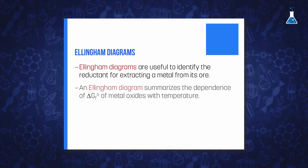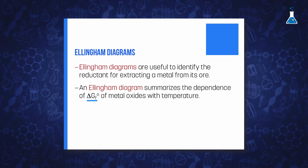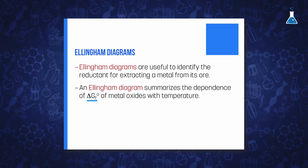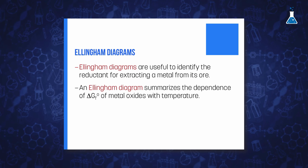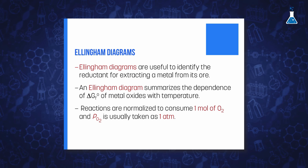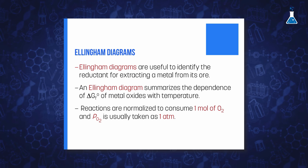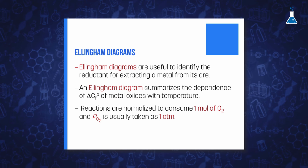An Ellingham diagram summarizes the dependence of the standard Gibbs energy of formation of metal oxides with temperature. Normally, the oxygen partial pressure is taken as one atmosphere and all reactions are normalized to consume one mole of oxygen gas. These diagrams will help us to predict the feasibility of reduction of an oxide.